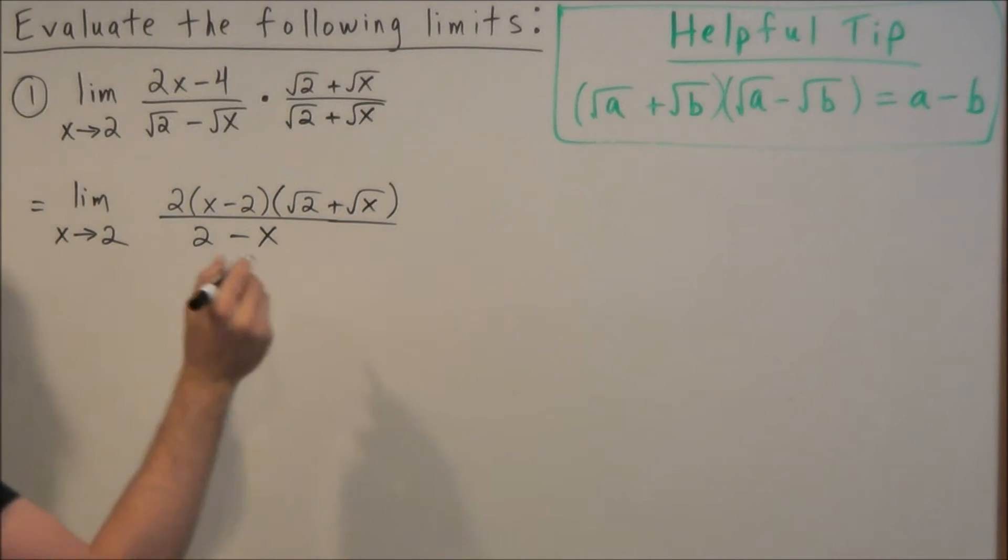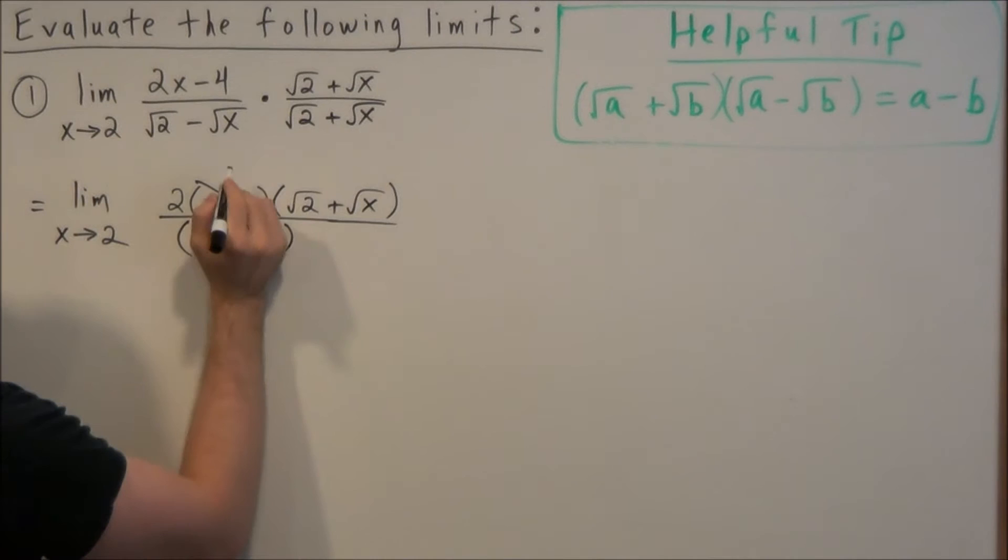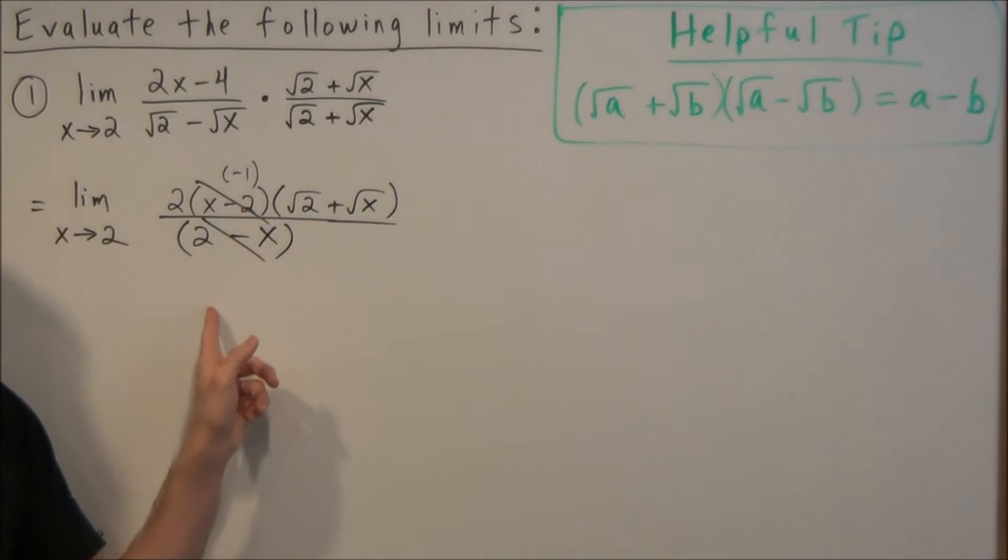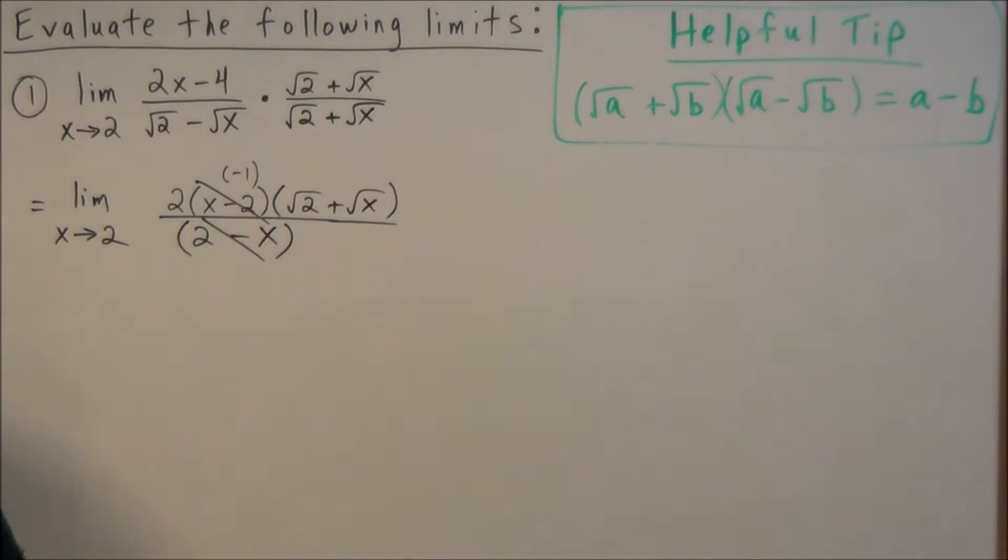So remember, at this step, do not multiply these two together, because if you look, x minus 2 over 2 minus x is going to cancel out. But remember, when they cancel, it's going to generate a negative 1 because the factors are flipped. If it was x minus 2 over x minus 2, they would cancel, and we wouldn't need to put a negative here.